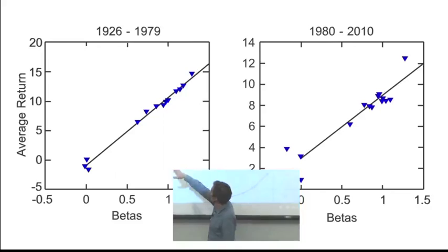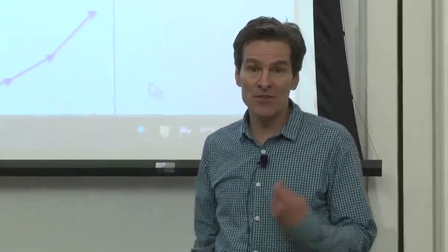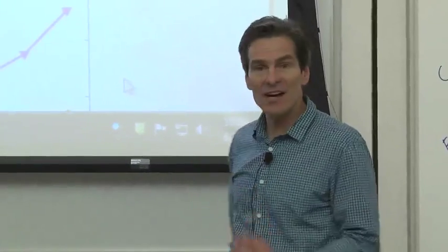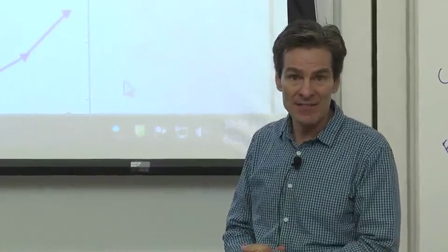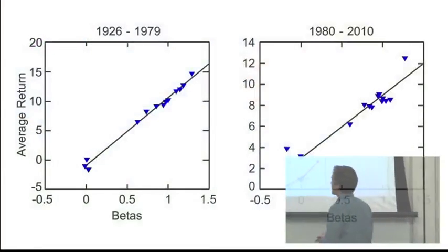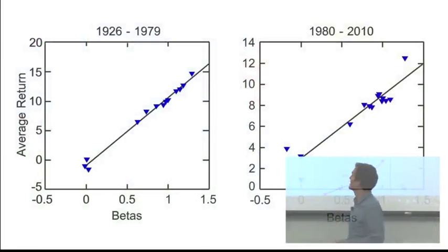The vertical axis is the average return. And that average return axis answers our first question. Are there some kinds of stocks that pay returns over long periods of time? This isn't just luck. They pay returns more than other kinds of stocks? Answer, yes, and big time.